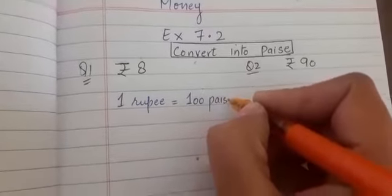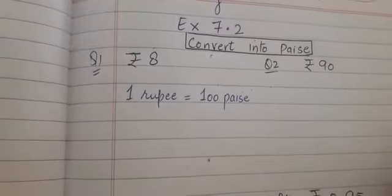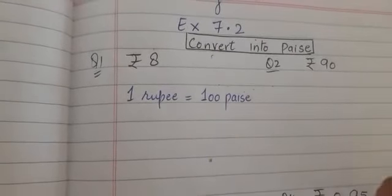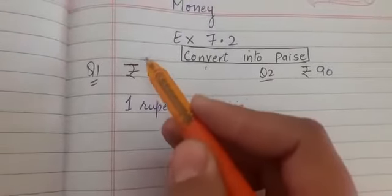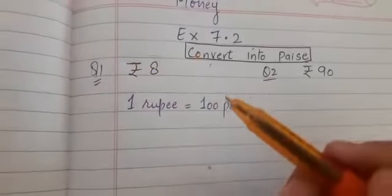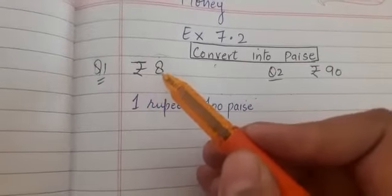Likewise, 2 rupees can be 200 paise, 3 rupees is 300 paise. Now if we have to convert any number into paise, we need to multiply the given number of rupees by 100 paise. Like the first question is rupee 8.